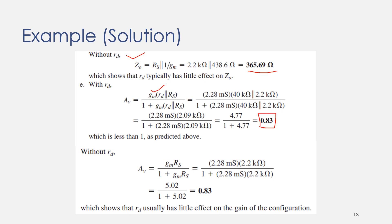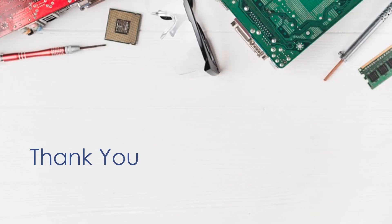Without Rd, the same equation gives essentially the same value, confirming that Rd does not have a major effect on output impedance and voltage gain. This configuration is not used for amplification; it is used for isolation and impedance matching. We will see a practical example of how this is useful when we move to the cascode configuration. If you have any questions, please let me know. Thank you very much.